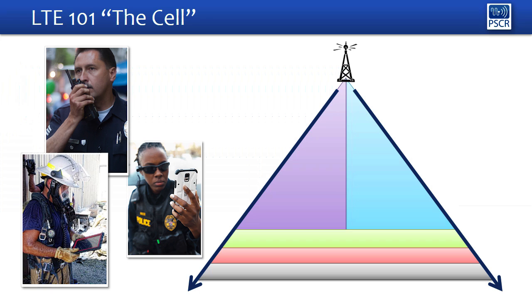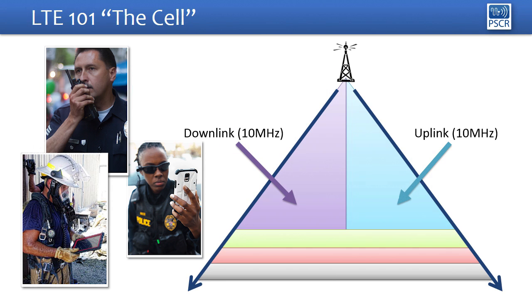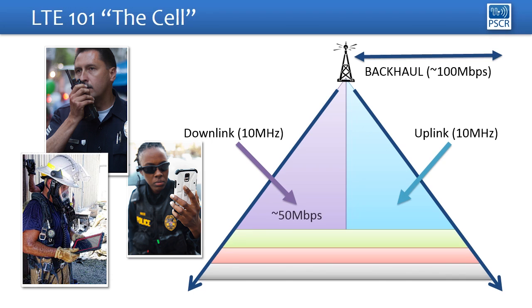Some of those critical resources are downlink and uplink bandwidth. On the LTE cell, typically you'll have about 50 megabits of throughput available to you on the downlink. That 50 megabits is shared amongst all users, and 50 is not a hard number — it could be 60. It depends on the antenna type and the optimization of the cell site. On the uplink, you have about 25 megabits per second, which is about half of the downlink. The difference is because there are two different technologies used for uplink and downlink.